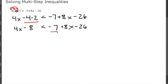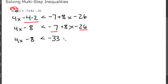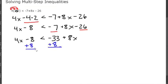On the right side we have two numerical terms we can combine: negative 7 minus 26 equals negative 33. So we have 4X minus 8 is less than negative 33 plus 8X. Now we combine numerical values by adding 8 to both sides, giving us 4X is less than negative 25 plus 8X.